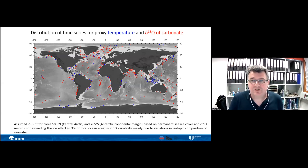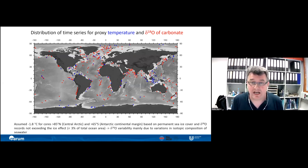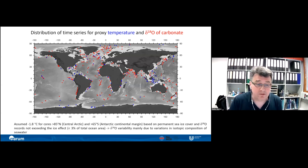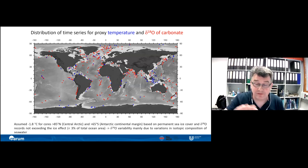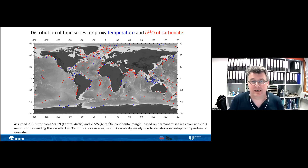This is the distribution of time series currently available — blue for Mg/Ca temperature, red for δ¹⁸O of carbonate. In polar latitudes near the Antarctic continental margin and in the Arctic Ocean, we don't currently have Mg/Ca temperatures, so I assumed a constant temperature of −1.8°C since these are mostly sea-ice-covered areas. This assumption is supported by the fact that these δ¹⁸O records show only about 1 per mil change, meaning they are dominated by δ¹⁸O of seawater and the ice effect. For the global mean, this doesn't make a big difference because these areas cover only about 3% of total ocean area.